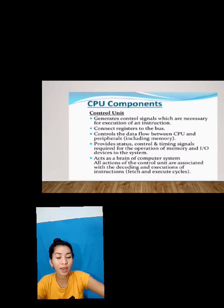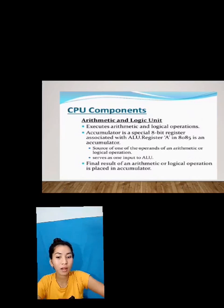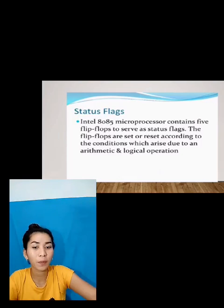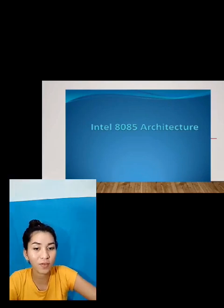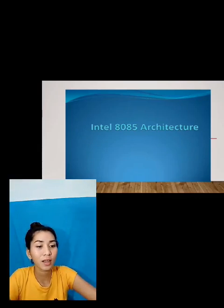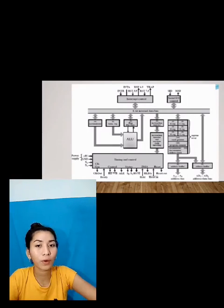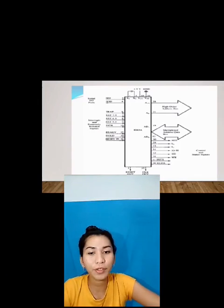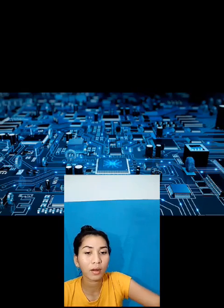There are five generations of microprocessors. The first generation is from 1971 to 1972, which brought microprocessors like the Intel 4004, Rockwell International PPS-4, and Intel 8008. The second generation marked the development of 8-bit microprocessors from 1973 to 1978, with processors like the Intel 8085, Motorola 6800 and 6801.